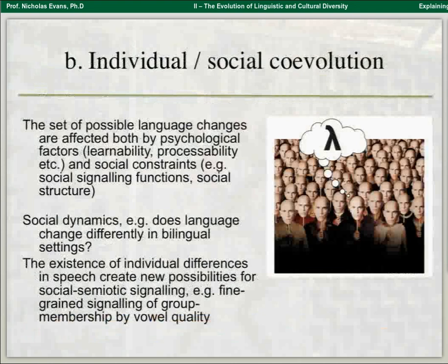This leads to a lot of questions about social dynamics — for example, does language change differently in bilingual settings? The fact that we get individual differences itself opens up opportunities for social semiotic systems: maybe accents, maybe fine-grained signalling of group membership by vowel quality. People tend to take that as a universal, but I don't think it is personally, because in the Australian languages I've worked on, vowels don't seem to fulfil that function.